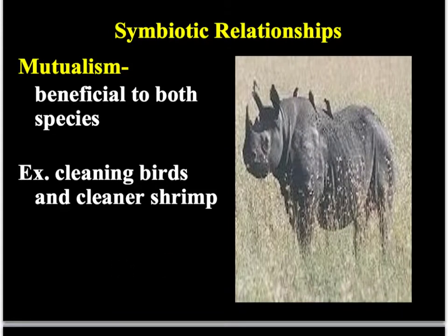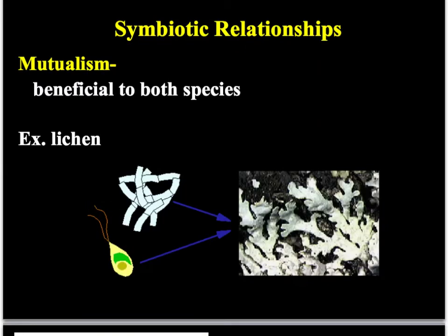Mutualism is when both species benefit — they both get something good out of the relationship. Here's an example using a rhino and plover birds on its back. The birds pick ticks, fleas, and other things off of the rhino, so they benefit by getting a meal. The rhino benefits because the birds are removing things that would make it sick. Both of them are benefiting — they're both happy.